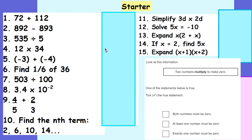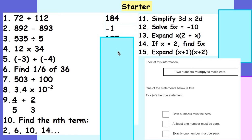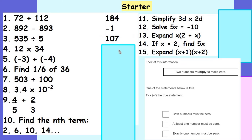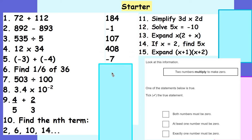Okay, let's run through the answers. For the first questions we've done a column addition and a column subtraction, that would give you 184 and negative 1. 535 divided by 5 gives you 107. That multiplication would give you 408. Negative 3 plus negative 4 gives you negative 7.